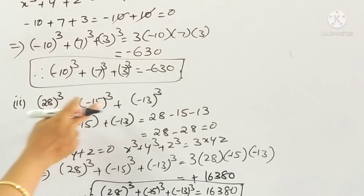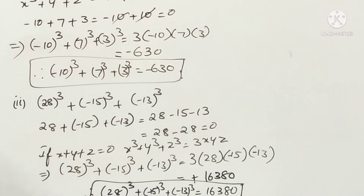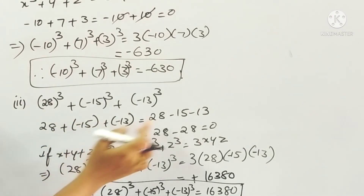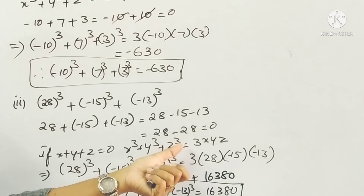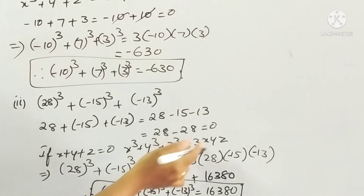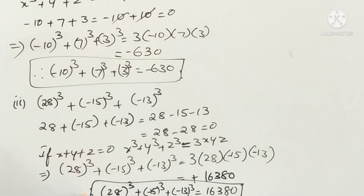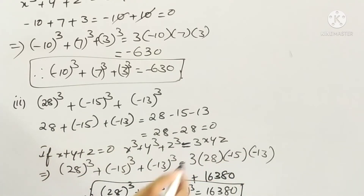Second part: 28 cube plus (minus 15) cube plus (minus 13) cube. Adding: 28 minus 15 minus 13 equals 0. So x plus y plus z equals 0, and the formula gives 3 times 28 times (minus 15) times (minus 13). Minus times minus is plus, so after multiplying all terms we get 16380.